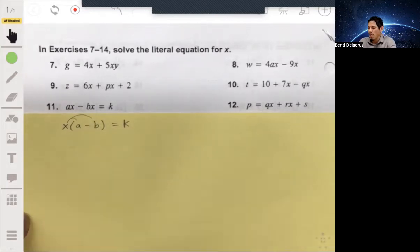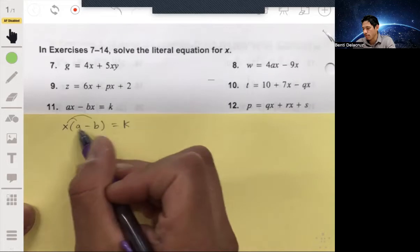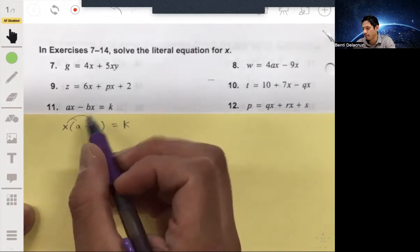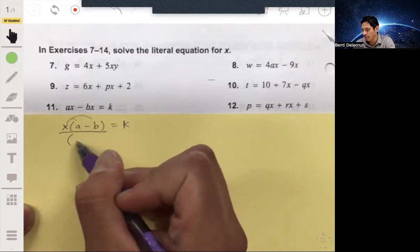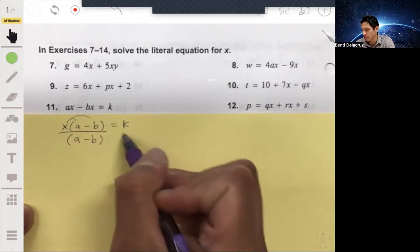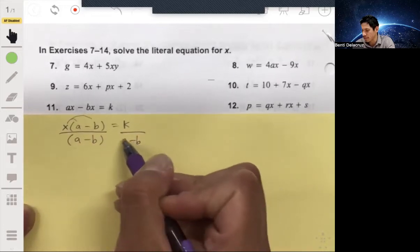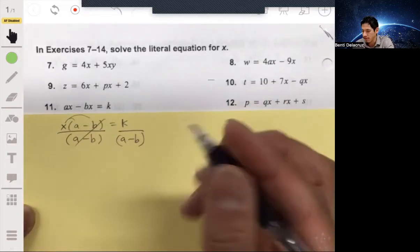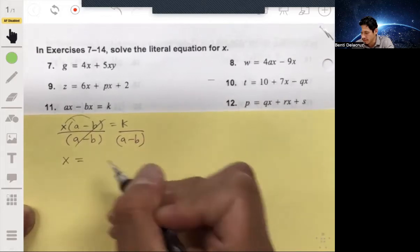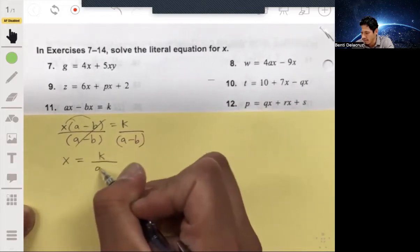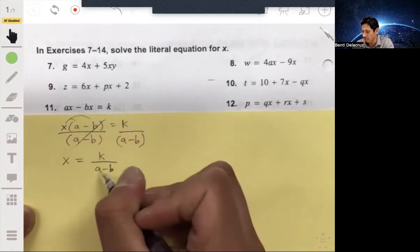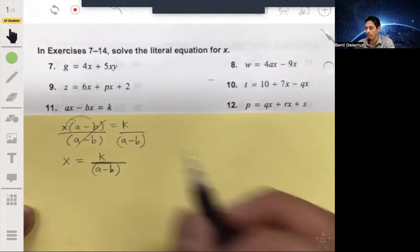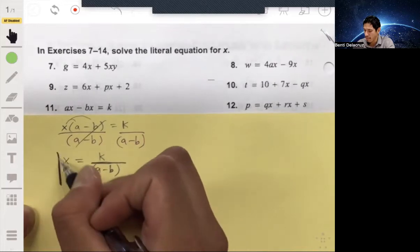Now, again, think of this whole group as a number. Think of it as like maybe it's five. So it's like X times five. If you want to get rid of the five, you're going to divide by it. So we're going to divide both sides by A minus B in this case. That whole thing goes away. And then your answer is just going to be X equals K over A minus B. You don't have to actually put the denominator in parentheses. I like to do it because it helps emphasize that it's a group. But this will be your answer.